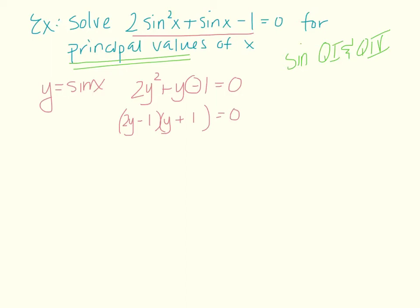And if I foil this out and check, I should end up with my same solution. So my first terms give me 2y squared. My last terms give me plus 2y. My inner terms give me minus y. That gives me positive y. And then my last terms multiplied give me negative 1. So that's just quick algebra review.